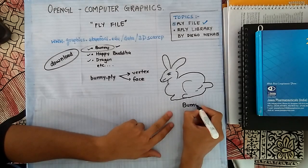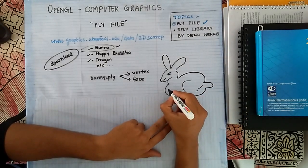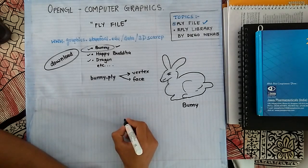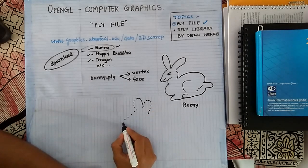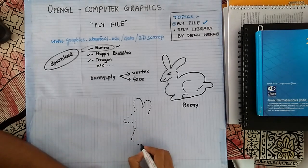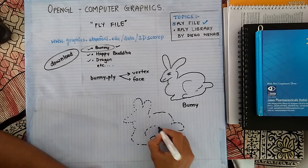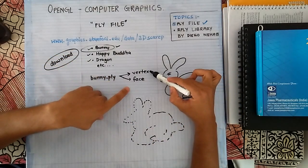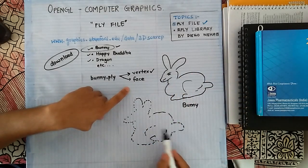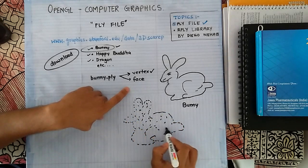Now suppose this is your bunny. To make such a bunny in computer graphics, you will need a lot of points specified in three-dimensional coordinates X, Y, Z. But if you connect these points and try to see, you will see a hollow bunny — you can see through it. We don't want that. So the first thing we need are vertices; there will be a lot of vertices.